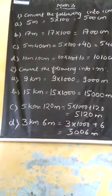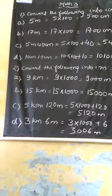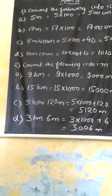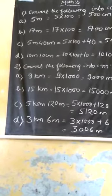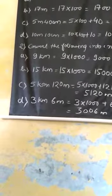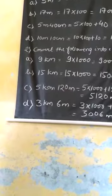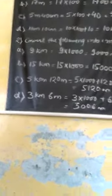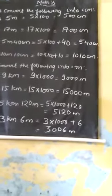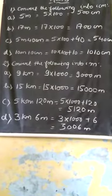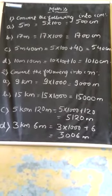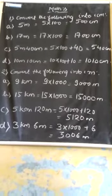Question B: convert the following into meters. First, know the conversion of kilometer to meter. One kilometer is equal to 1000 meters. So we multiply the given unit by 1000 to convert kilometers to meters. Here, 9 kilometers: 9 into 1000, it will be 9000 meters.